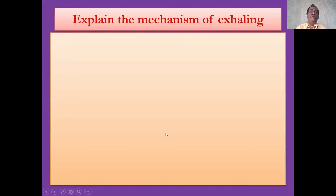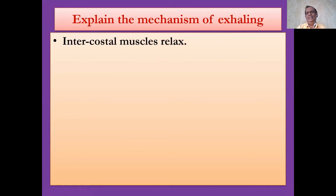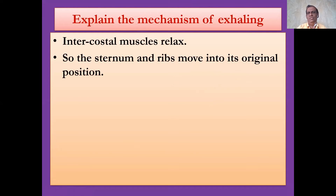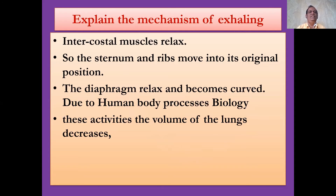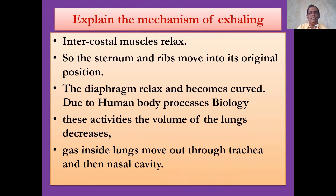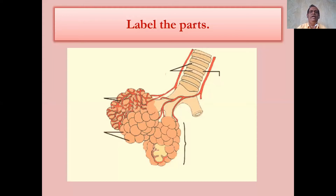Explain the mechanism of exhaling — removing the air to the environment. This is opposite to inhaling. The intercostal muscles relax, so the sternum and ribs move to their original position. The diaphragm relaxes and becomes curved. Due to these activities, the volume of the lungs decreases. The gas inside the lungs moves out through the trachea and then the nasal cavity. So exhaling takes place.